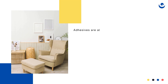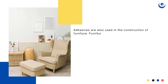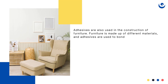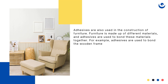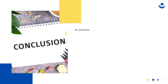Adhesives are also used in the construction of furniture. Furniture is made up of different materials, and adhesives are used to bond these materials together. For example, adhesives are used to bond the wooden frame of a chair to the cushioning material. Adhesives are also used to bond the decorative fabric to the cushioning material.